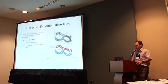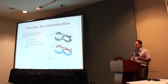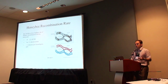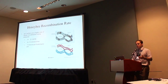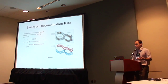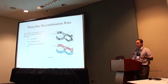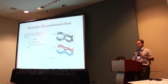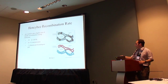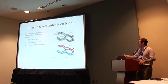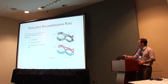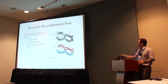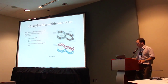Honeybee recombination rate is the highest rate among metazoans, at 19.22 centimorgans per megabase. With a diploid genome of 32 chromosomes, they have about five chiasma per homologous chromatids that pair up. The chiasma are these regions, these arms where the homologous chromosomes cross over with each other and swap genetic information.